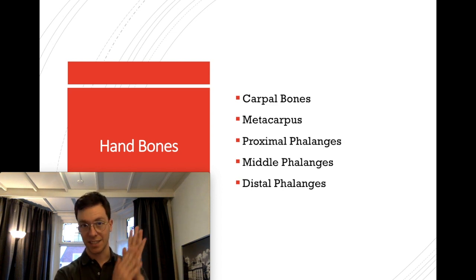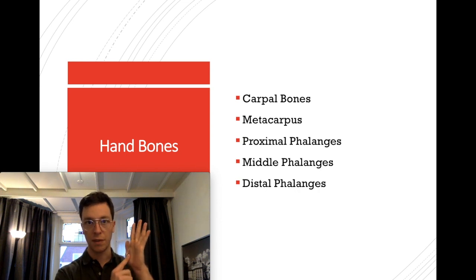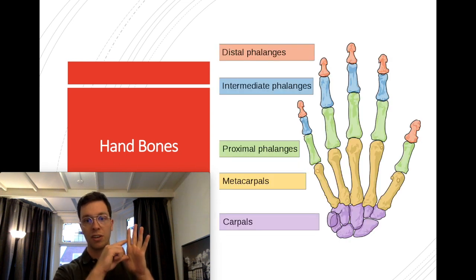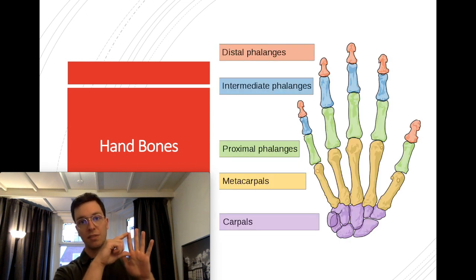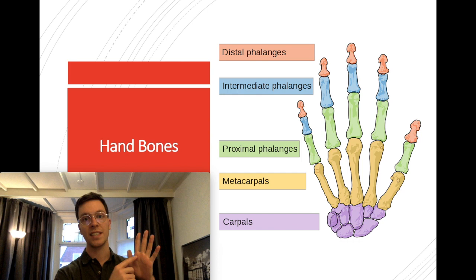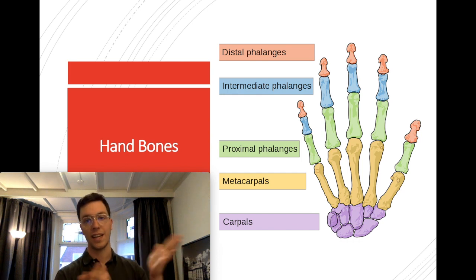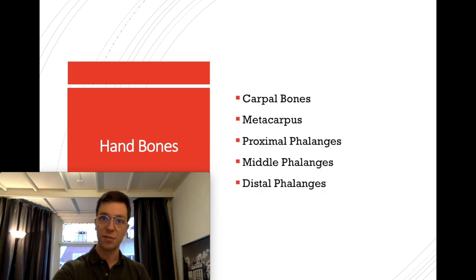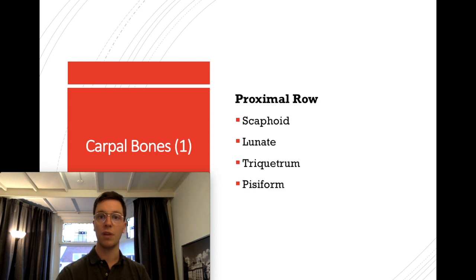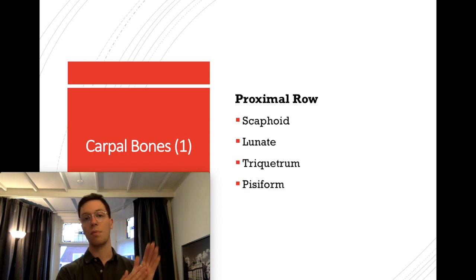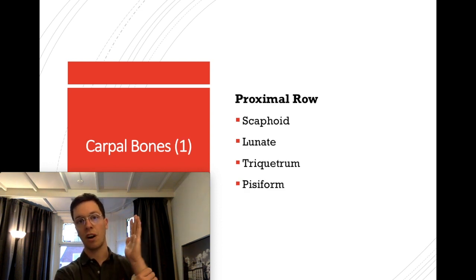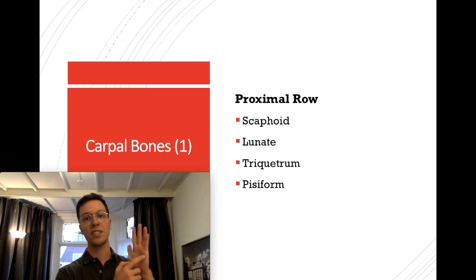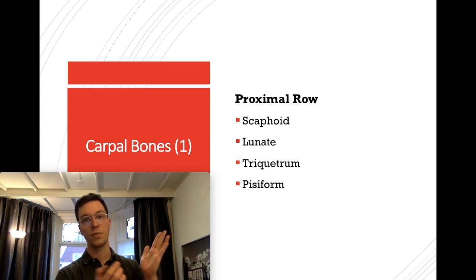The hand bones can be divided into several groups. First of all you have your carpal bones, then your metacarpus, and then your phalanges, which can be divided into the proximal, middle, and distal phalanges. I will now start with the carpal bones. The carpal bones connect your hand to your arm and they consist of eight individual bones which make up two rows.